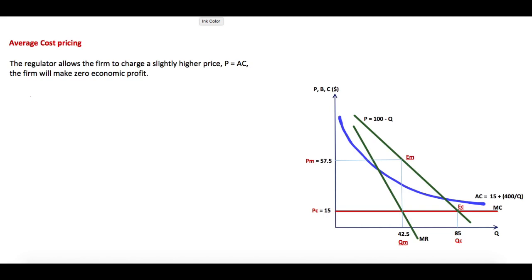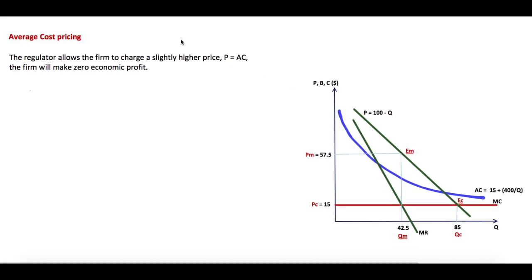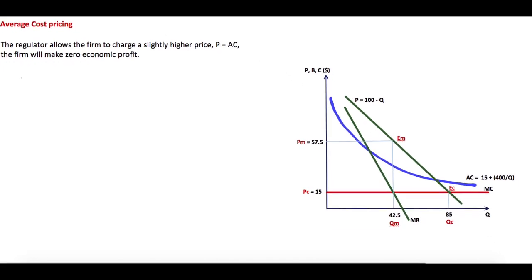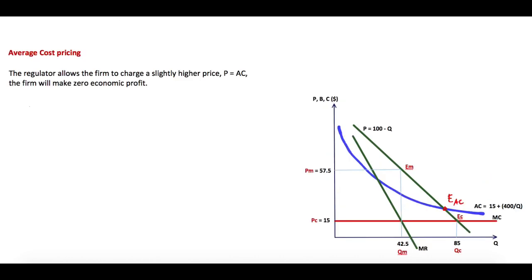With this approach, the regulator allows the firm to charge a slightly higher price. It will be in this equilibrium we call EAC, and by doing so the firm will make zero economic profit by setting the price equal to the average cost.